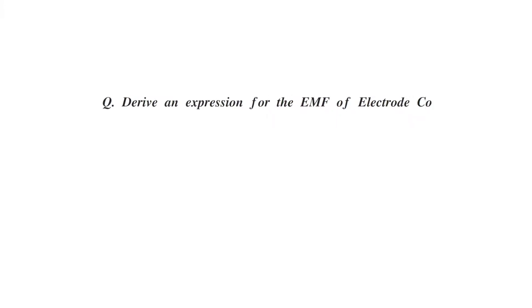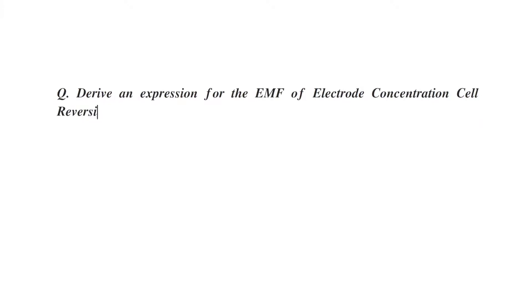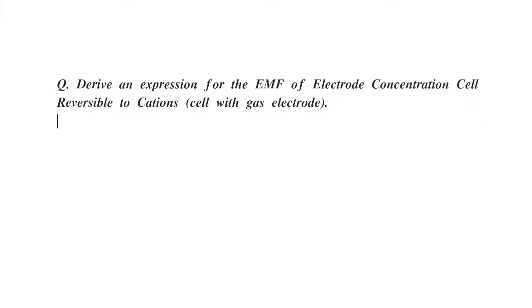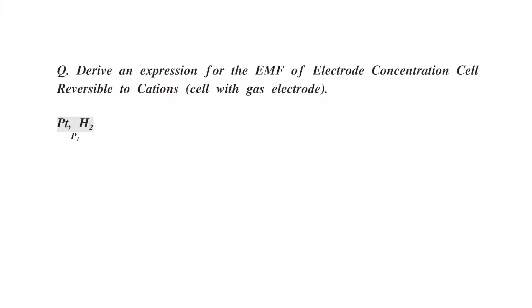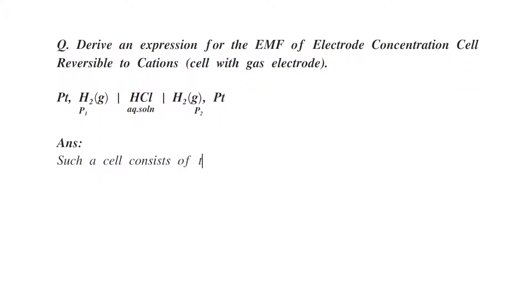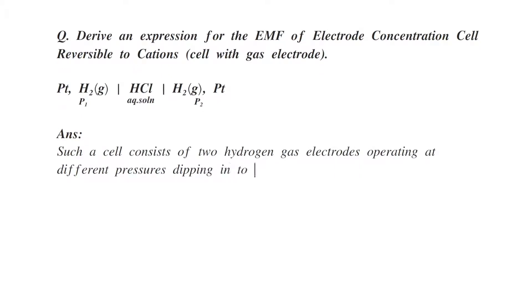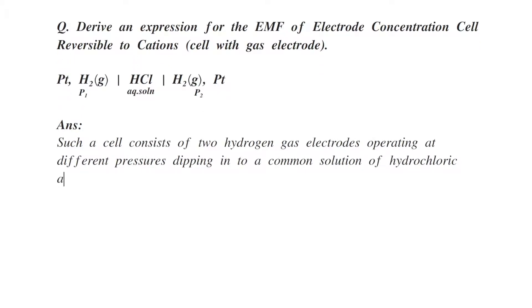Derive an expression for the EMF of electrode concentration cell reversible to cations, with a gas electrode. An example is: platinum, hydrogen gas at 1 atmospheric pressure, in contact with HCl aqueous solution, in contact again with hydrogen gas at pressure P2. Such a cell consists of two hydrogen gas electrodes operating at different pressures, dipping in a common solution of hydrochloric acid.